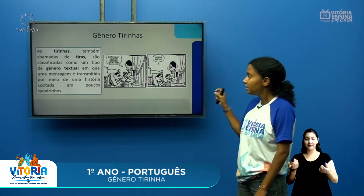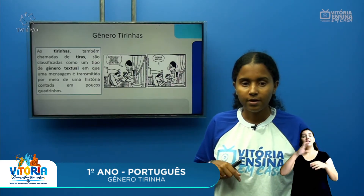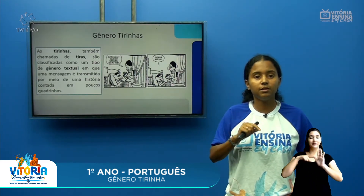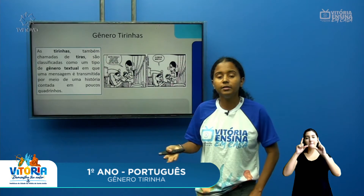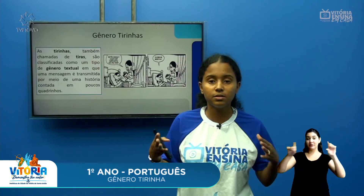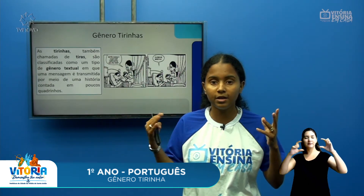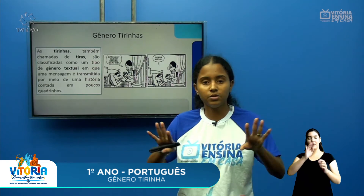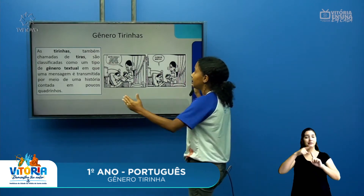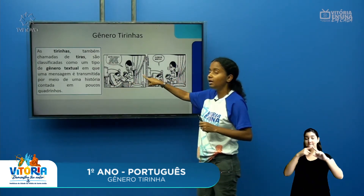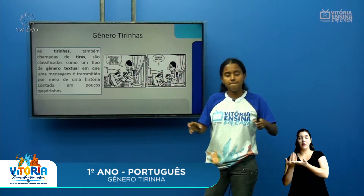As tirinhas, também chamadas de tiras, são classificadas como um gênero textual em que uma mensagem é transmitida por meio de uma história contada em poucos quadrinhos. As tirinhas são derivadas das histórias em quadrinhos — os gibis que a gente encontra. As tirinhas são uma espécie de história em quadrinhos, só que elas são menores. Elas têm menos quadrinhos que as histórias em quadrinhos, que são histórias maiores.